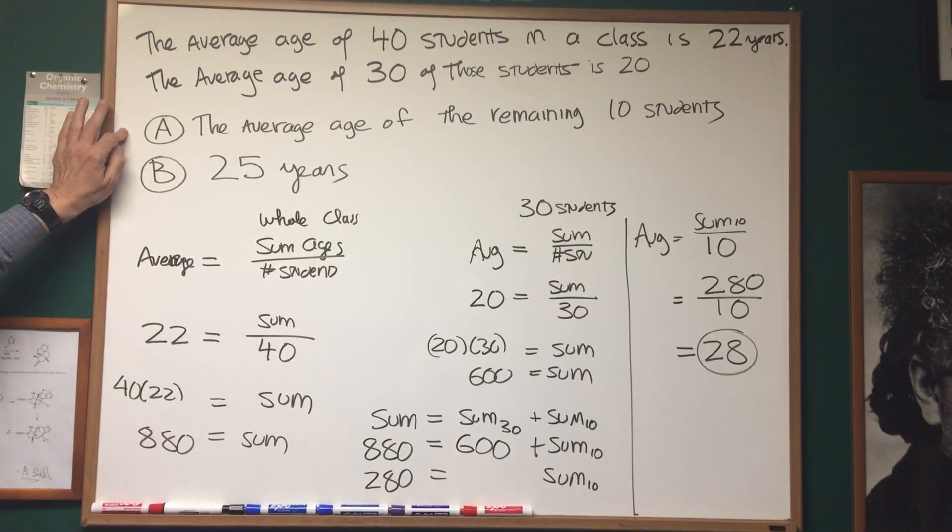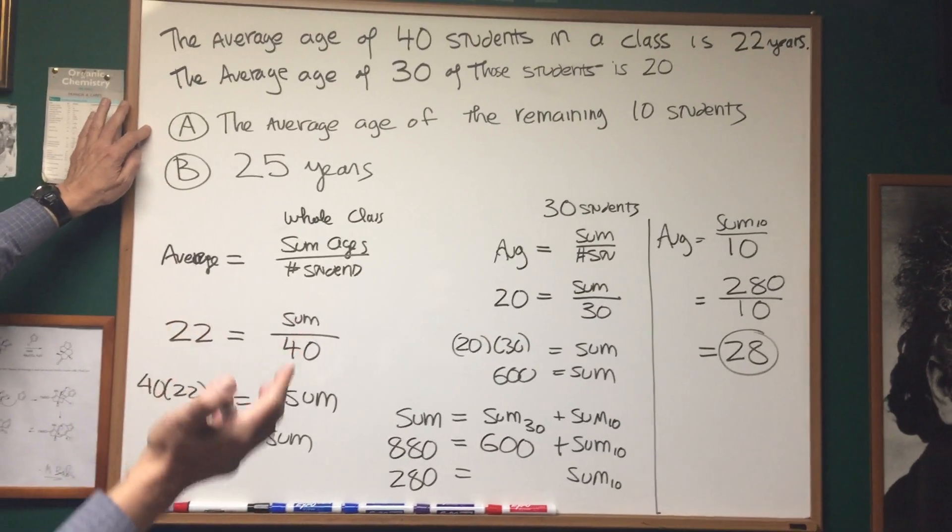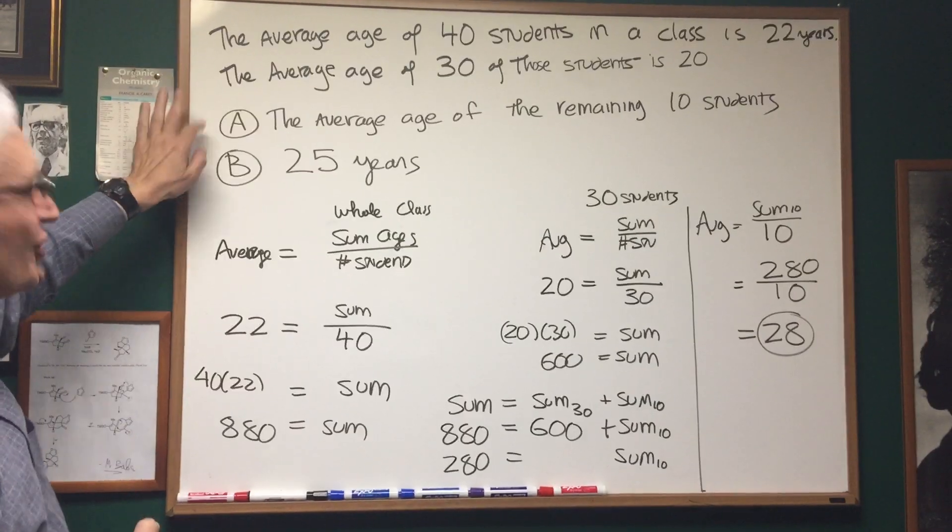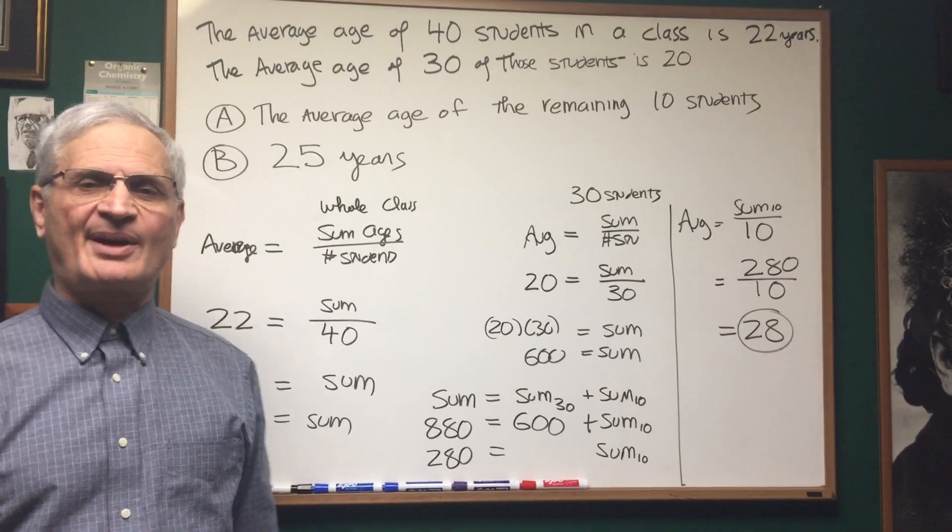So that's what value A computes to be, 28. Value B is 25. Value A is greater than value B, so our choice would be A. And that's the solution to the problem.